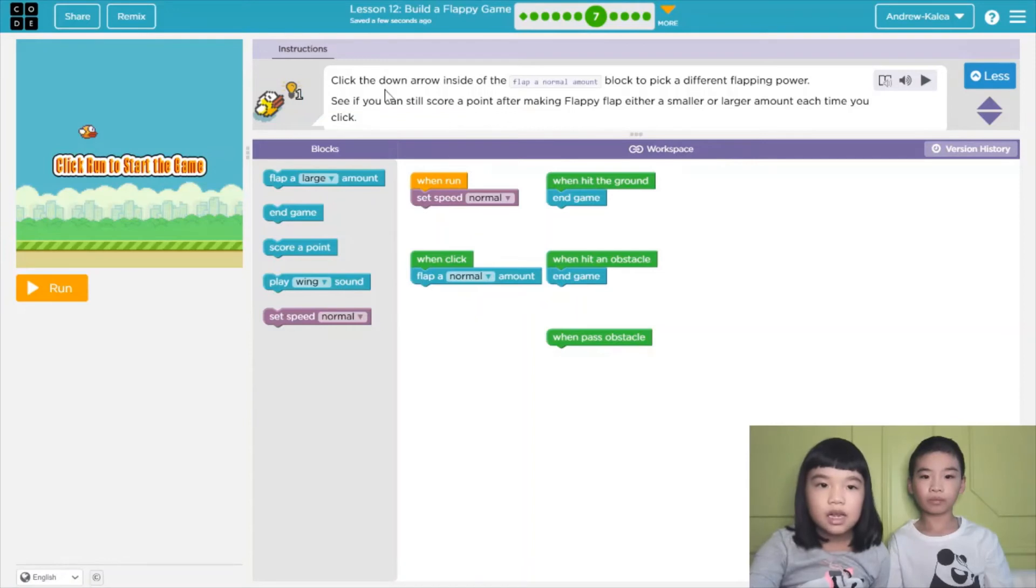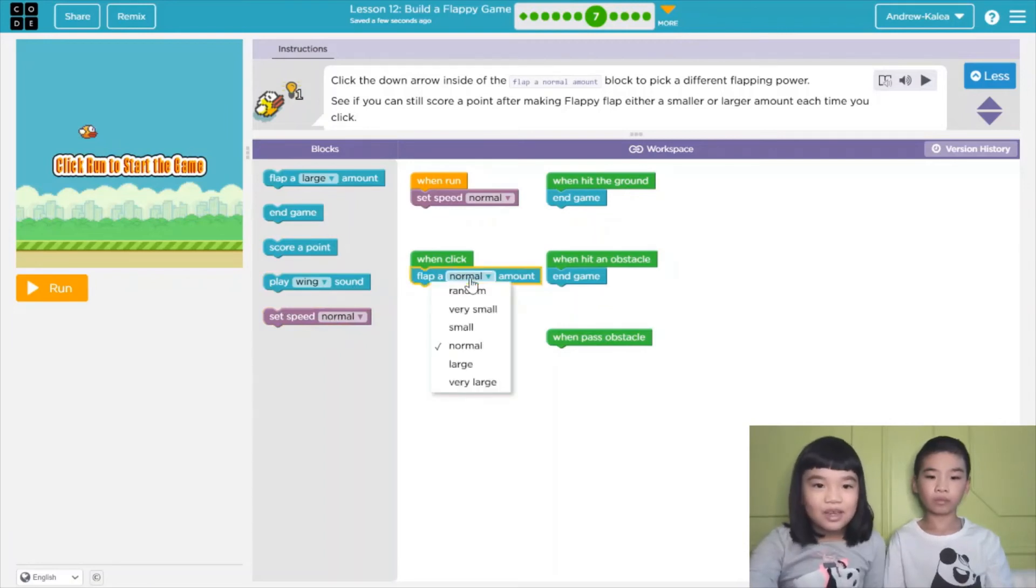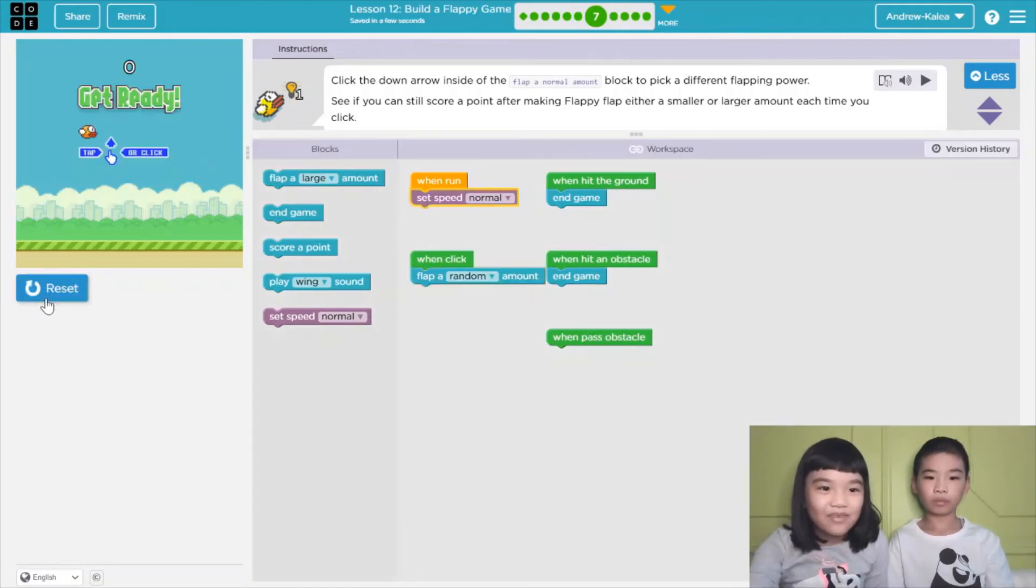Now it says, click the down arrow inside of the flap a normal amount block to pick a different flapping power. See if you can still score a point after making Flappy flap either a small or large amount each time you click. Random? Yes, let's do random. I love random.